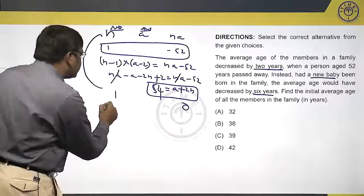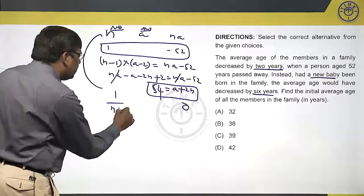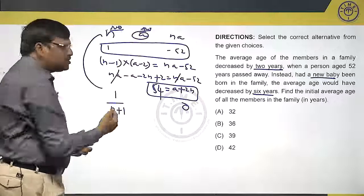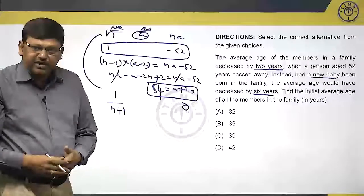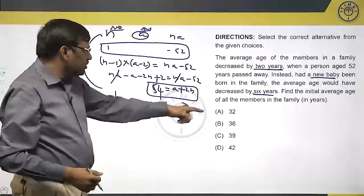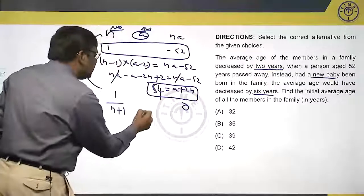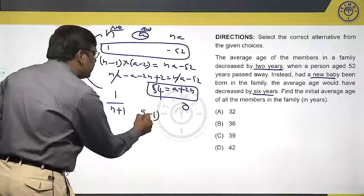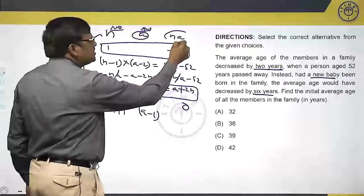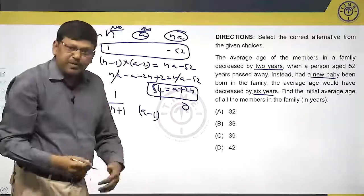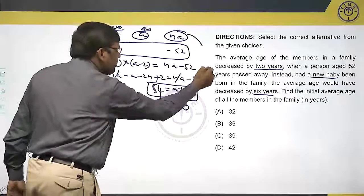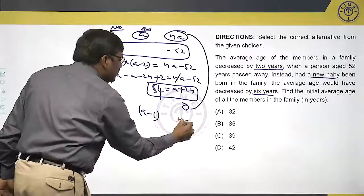Now, I will have n plus 1 people. But what about the average? Because the number of people increasing without any addition, the average is coming down. Coming down by how many years? 6 years means a minus 6 is the new average. But what is the sum? Now, originally the sum is n a, now because the baby is born just now, so there will not be any addition to the total, so the sum will be n a.